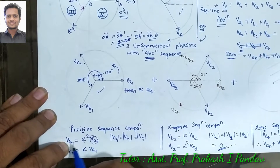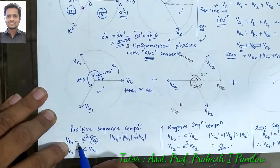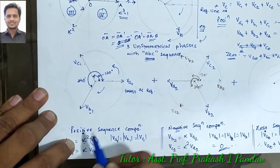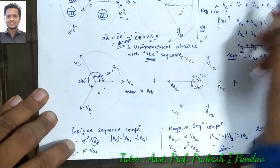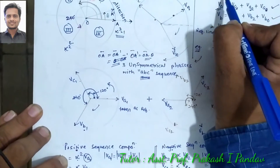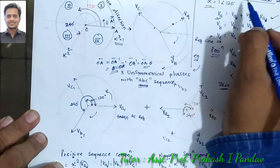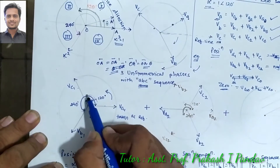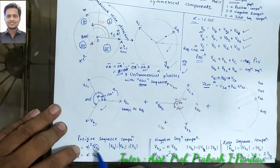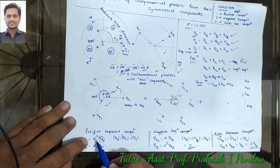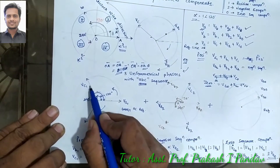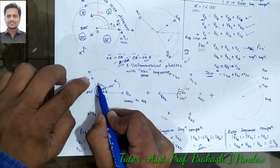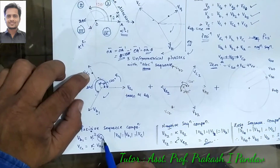Taking VA1 as reference, VB1 equals alpha squared into VA1. This is because alpha equals 1 at 120 degrees, so 120 plus 120 equals 240 degrees, which is alpha squared. Similarly, VC1 is at 120 degrees from VA1, which means VC1 equals alpha into VA1.